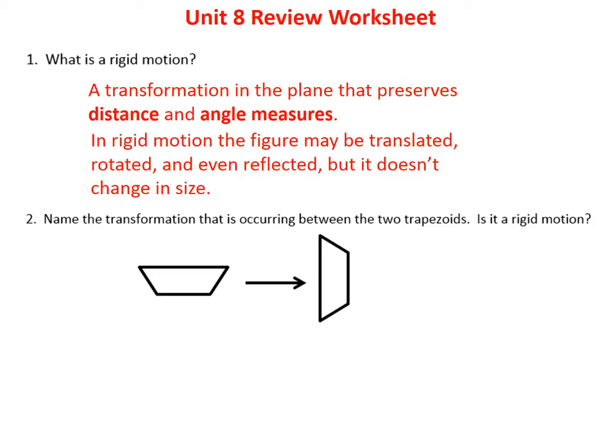In each of those cases it doesn't change size. Think of a rigid motion like a box made of metal or wood — it stays the same size. You can move it around, turn it upside down, or throw it across the room, but it stays the same size. That's what a rigid motion transformation is.